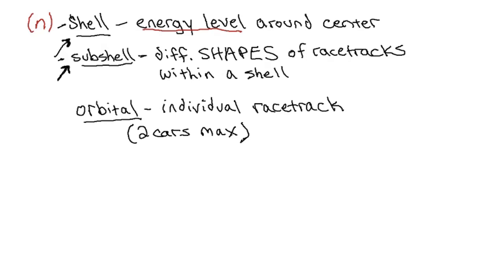The subshell we're going to call lowercase L — and I write that in cursive so you don't think it's a one by mistake. So the shapes are going to be called lowercase L. And the orbital we're going to call M sub L — m with little L as a subscript. So m sub L, and each individual racetrack is going to have its own individual number m sub L.